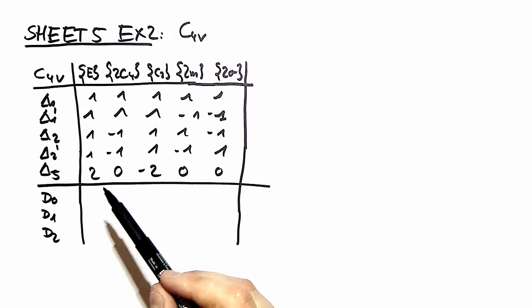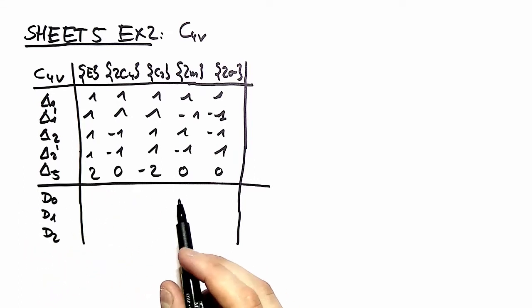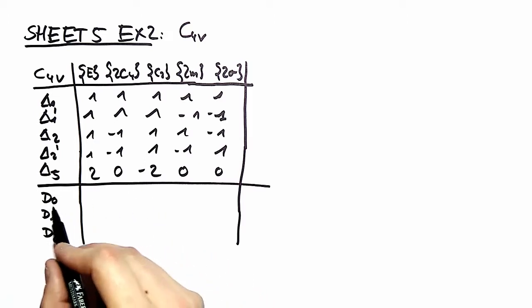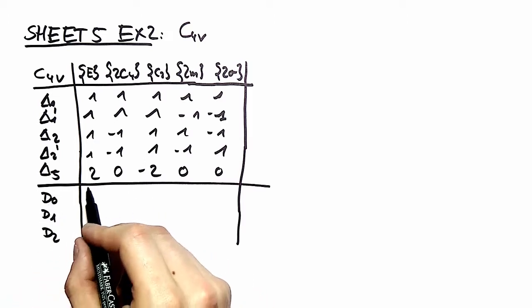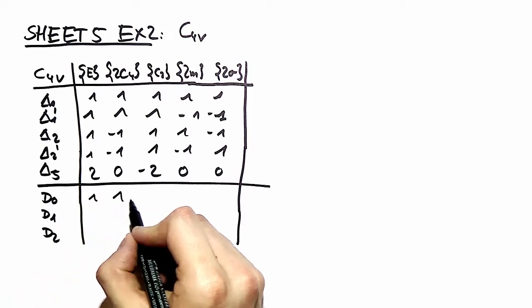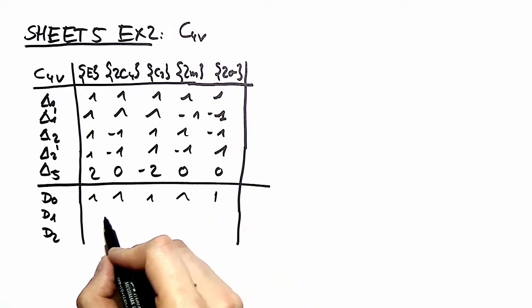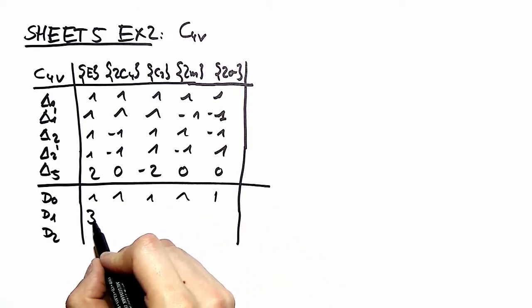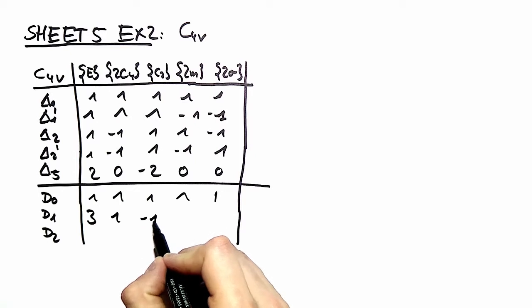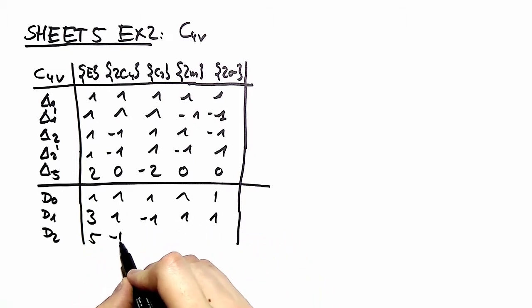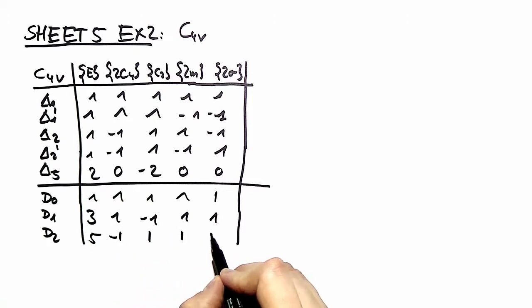When you do the same thing as with the C3v and the basis functions of d0, d1, and d2, you end up having here only once. Here it's again three dimensional. You have 1, minus 1, 1, 1, 1, and here you have five dimensional minus 1, 1, 1, 1.